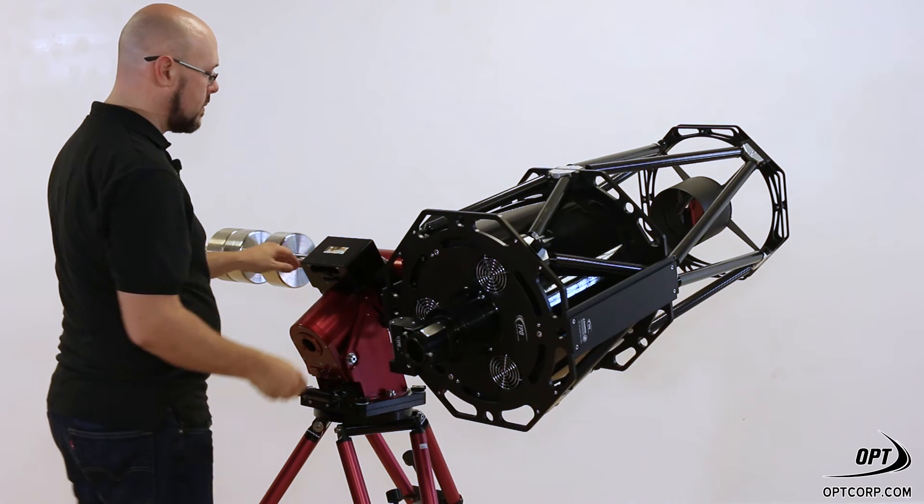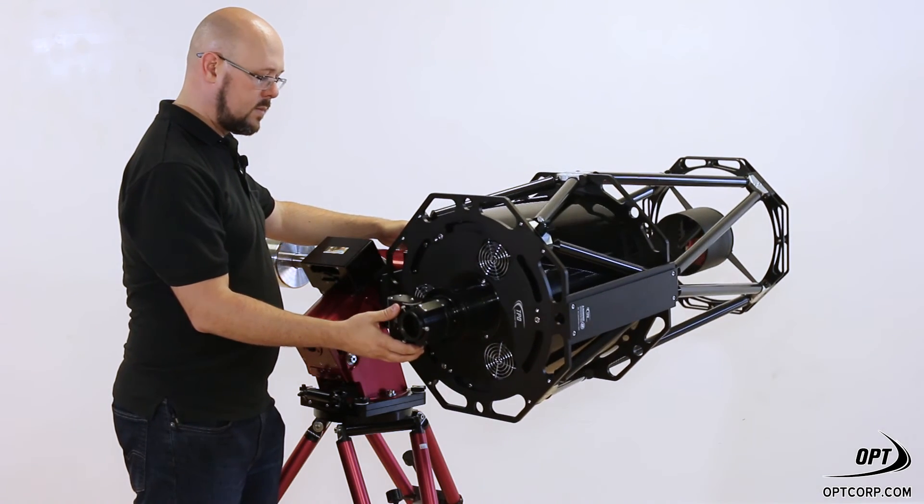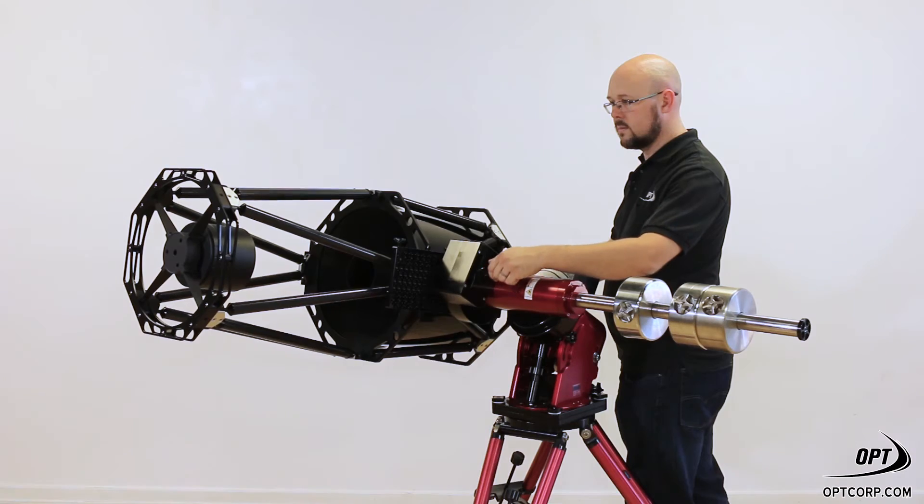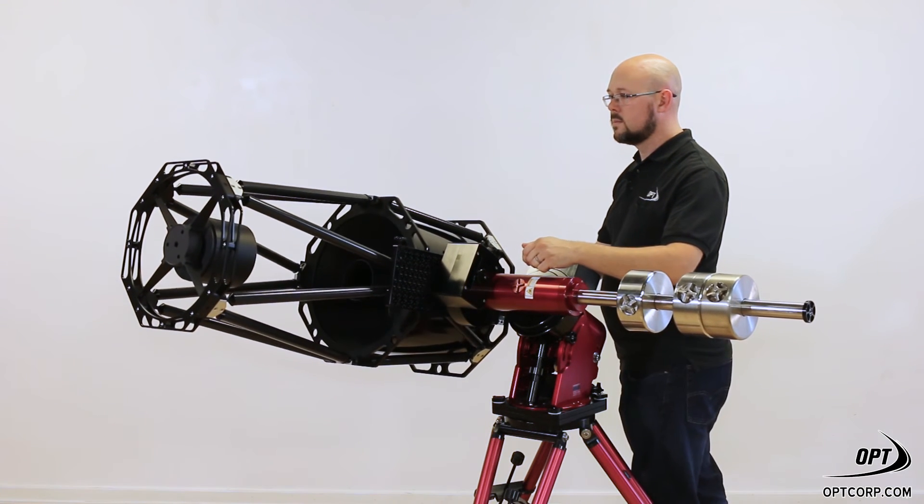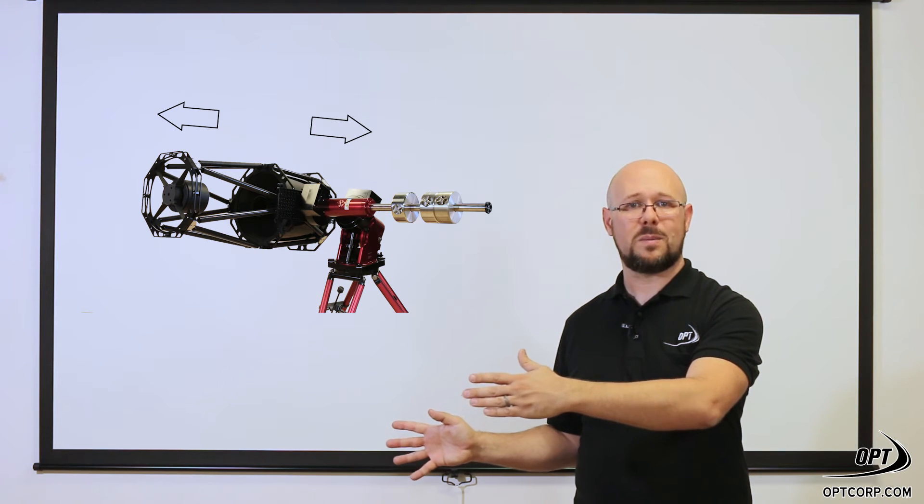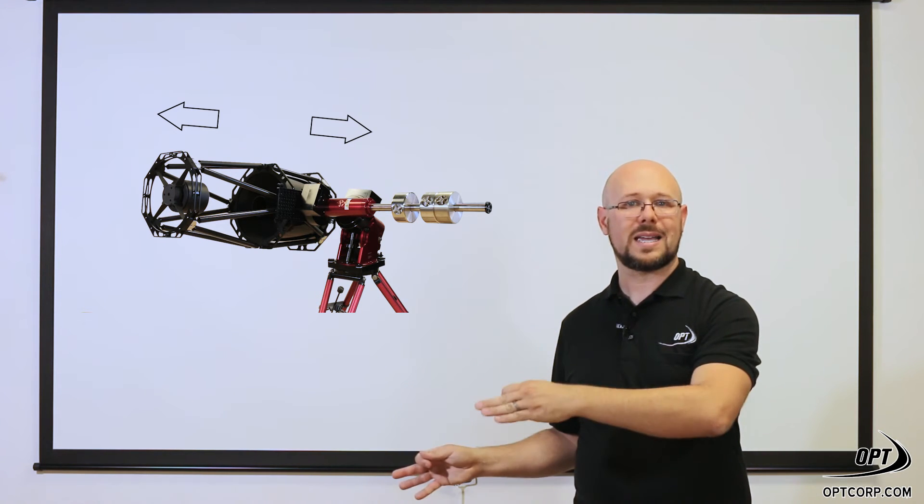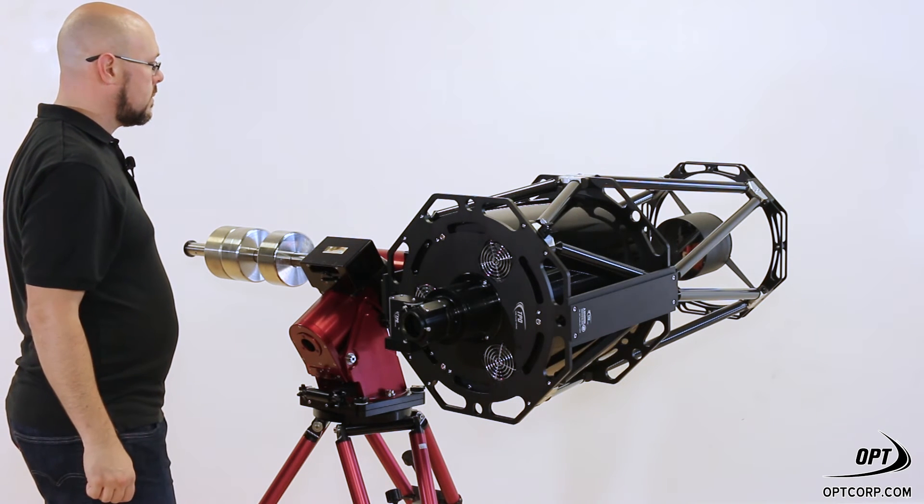If you then go over to the declination axis and unlock that, you have the back end of the telescope and the front end of the telescope. Whichever one is heavier is going to drop. And the way to solve this is to slide the telescope on the dovetail and saddle plate forward or back until you can release it and neither the front end or the back end drops.